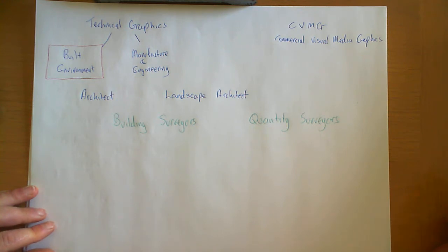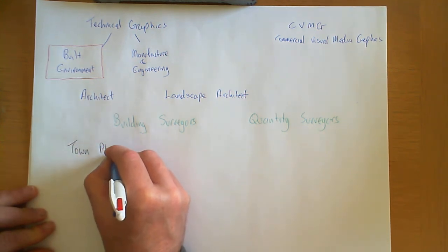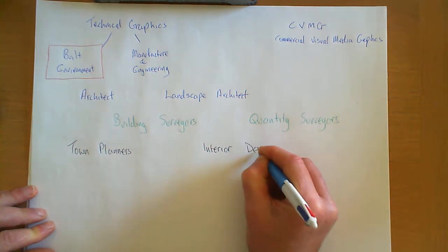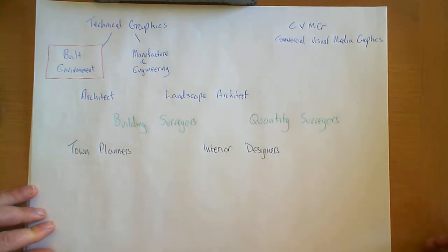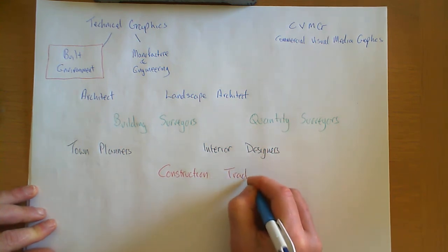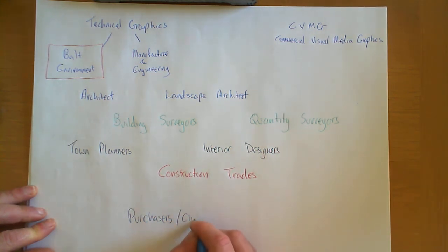There are lots of people involved in the built environment. Remember, the built environment is to do with bridges, roads, tower blocks, factories, car parks — anything which we as a society build on the landscape. After quantity surveyors we have town planners, interior designers, a big group called the construction trades — which we'll come back to in a moment — and finally the group of purchasers and clients.